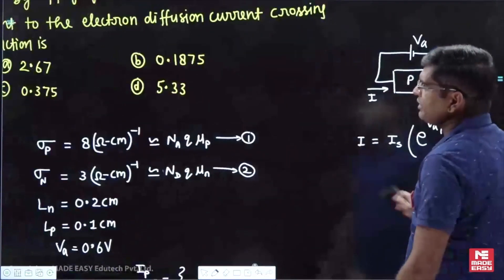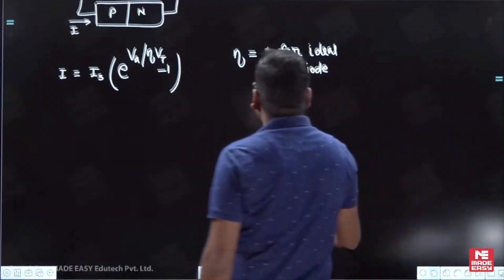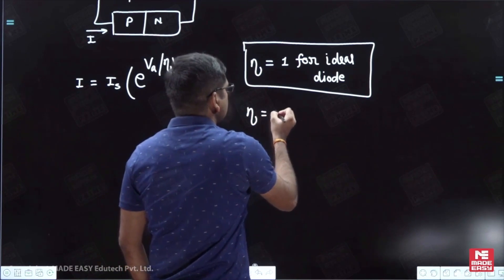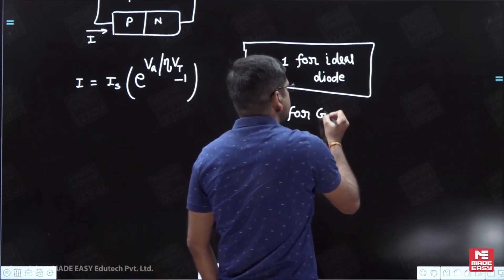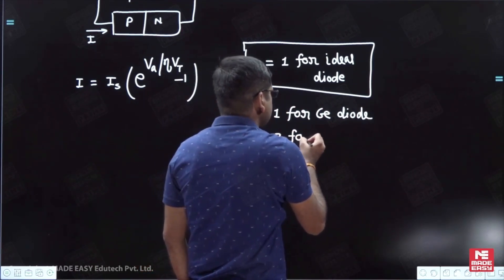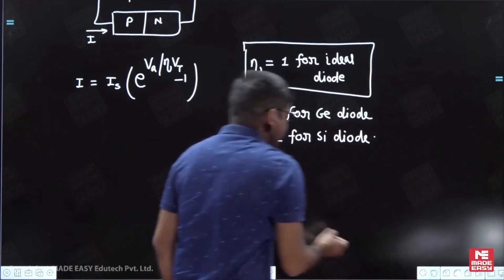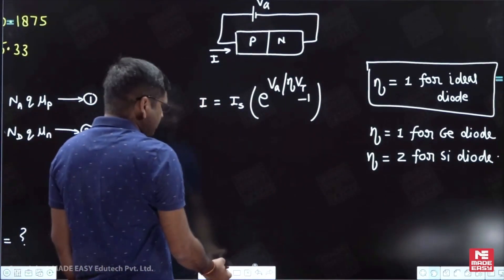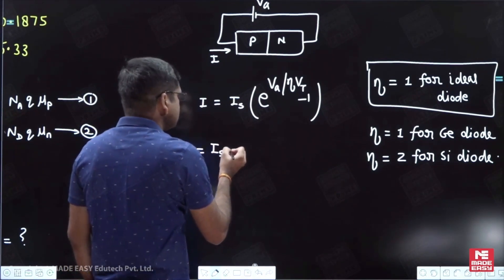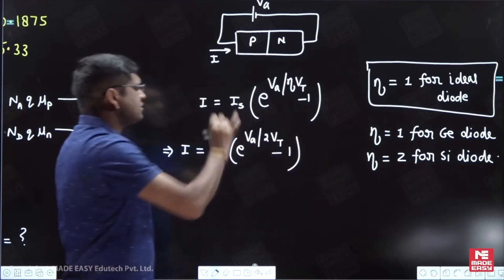The question mentions silicon PN junction, so eta equals 1 for germanium diode and eta equals 2 for silicon diode. Since the question specifies silicon, the current equation becomes I = I_s times (e to the power Va/(2*Vt) minus 1), where Vt is the thermal voltage.